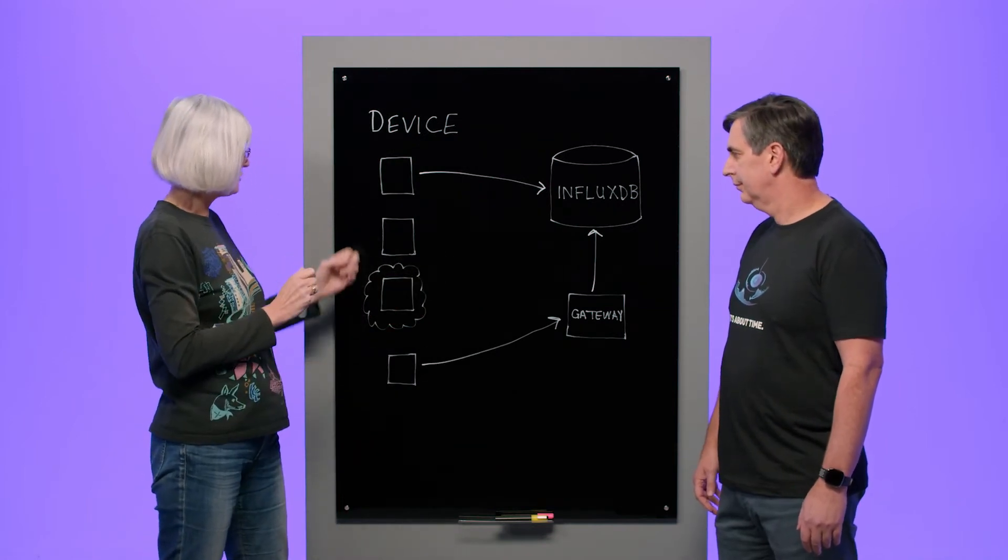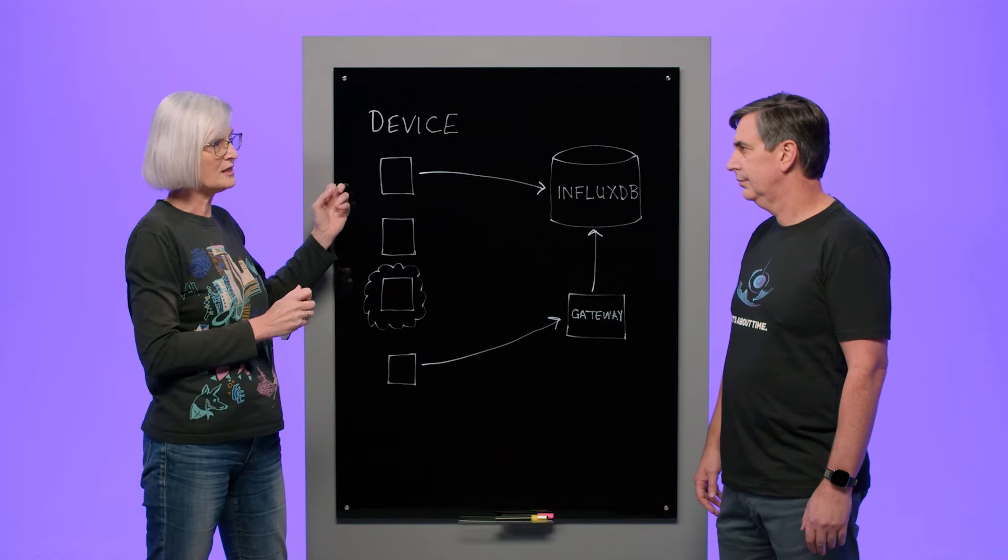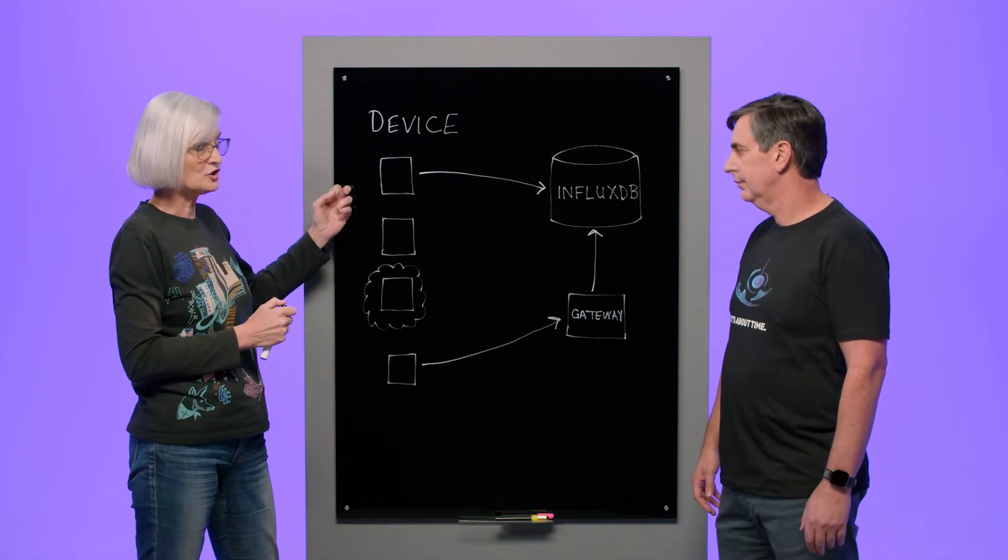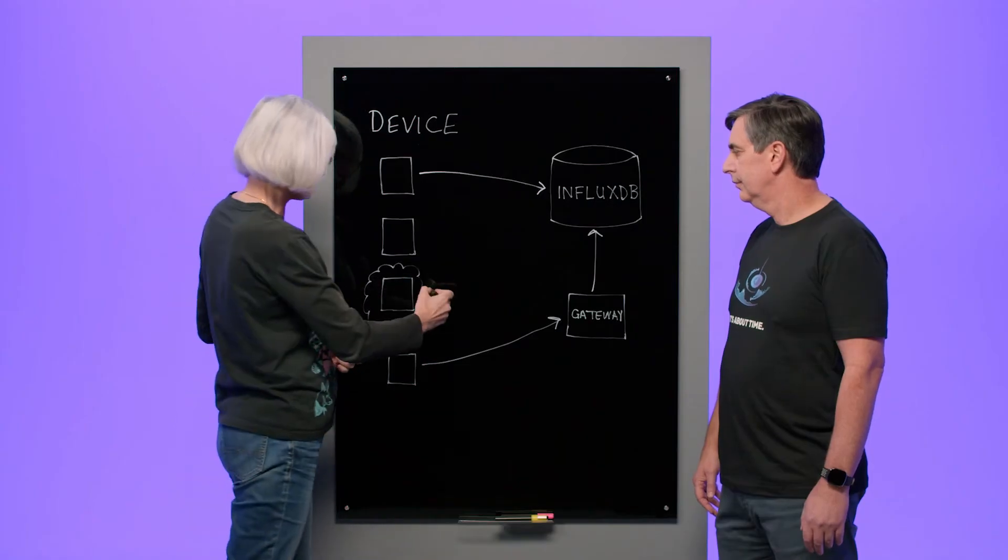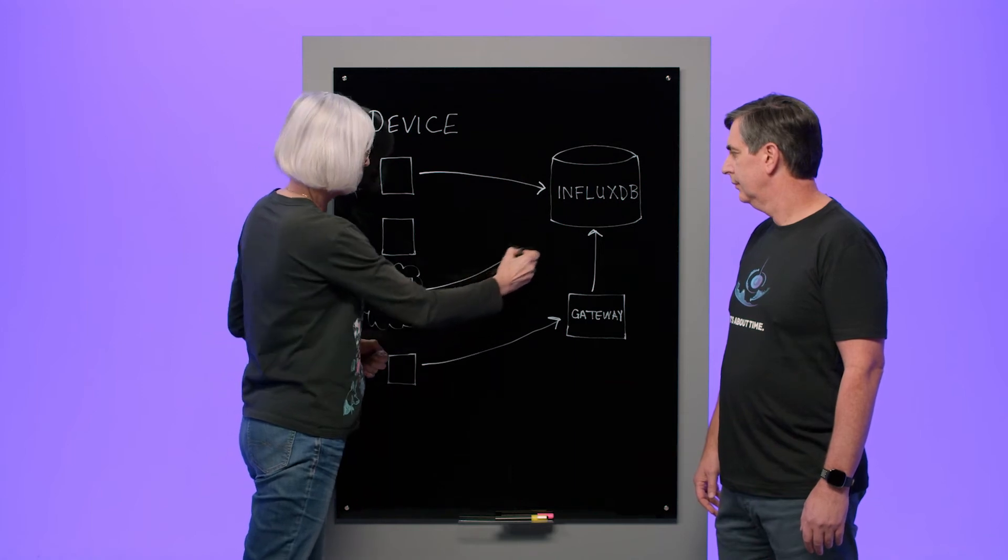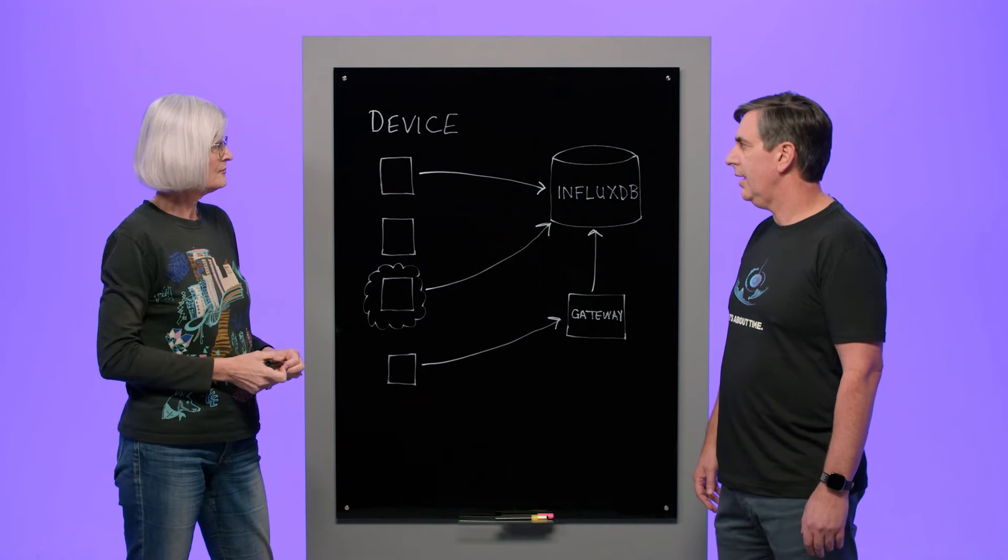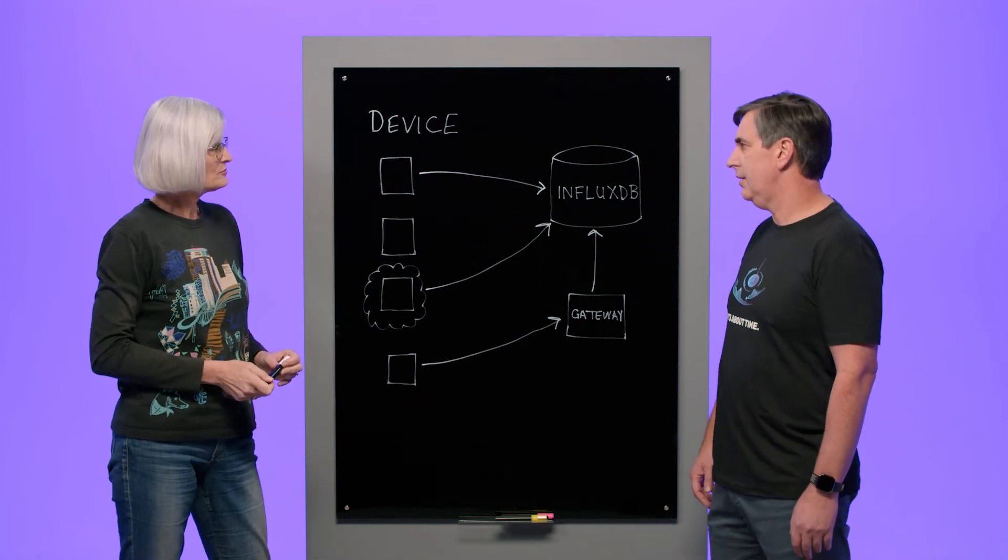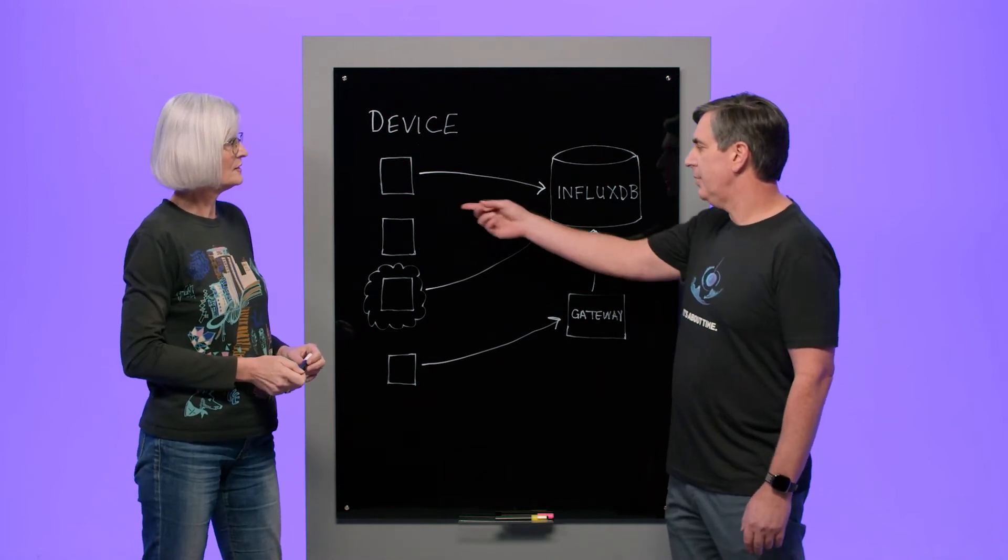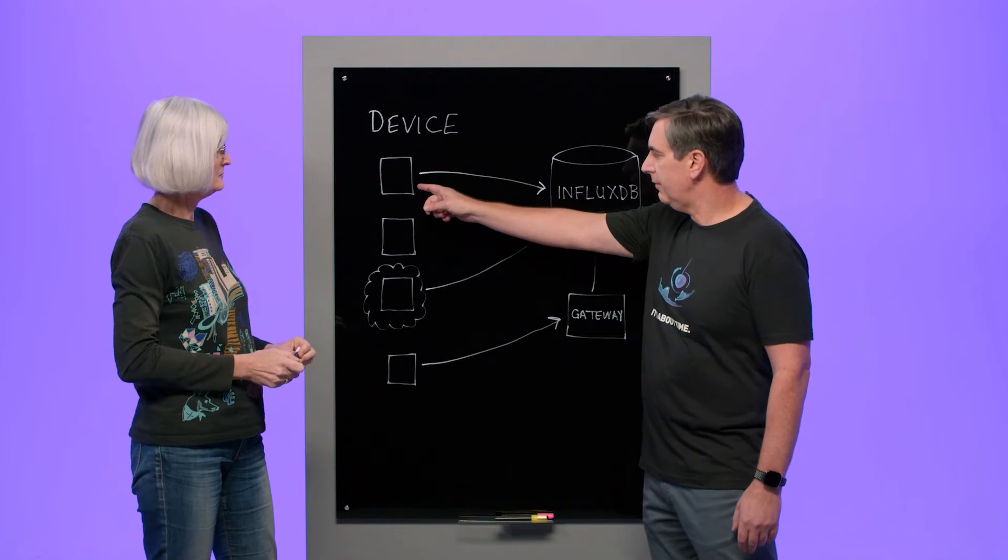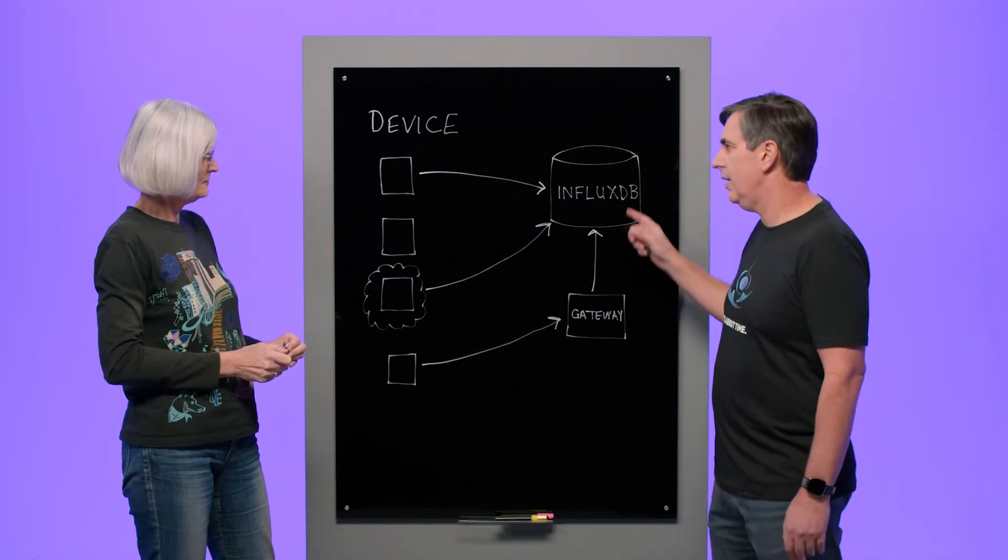And then one other important consideration is the devices. We often think of them as if they're out at the edge, and they often are out at the edge, but they can also be in the cloud. Or you can have some other mechanism that has gotten the data to the cloud, in which case you're sending data directly from your cloud instance to InfluxDB in the cloud. Got it. Okay. So as an application developer, do you give me any options or tools to help me write from here or from my gateway into Influx?